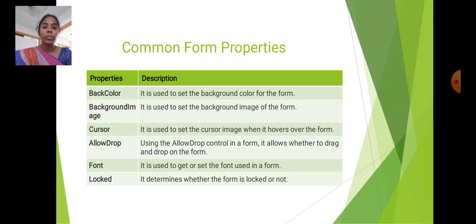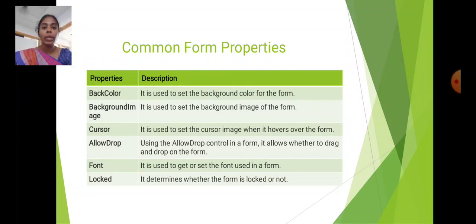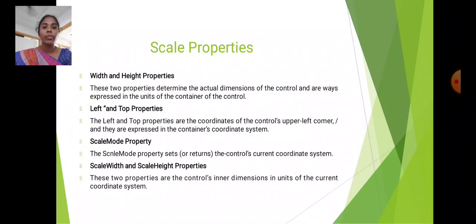Common Form Properties. Back Color: used to set the background color for the form. Background Image: used to set the background image of the form. Cursor: used to set the cursor image when it hovers over the form. Allow Drop: used to allow drop control in the form and whether to track or drop on the form. Font: used to get or set the font used in a form. Locked: determines whether the form is locked or not. Scale Properties — Width and Height Properties: these two properties determine the actual dimensions of the control and are always expressed in the units of the container of the control.